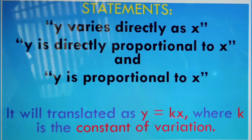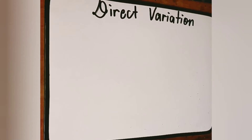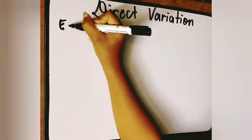Remember those three statements because when you see them in a word problem, you will know it is a direct variation — 'varies directly,' 'directly proportional,' and 'y is proportional.' It will be translated as y is equal to kx, where k is the constant of variation. Remember, k is constant.